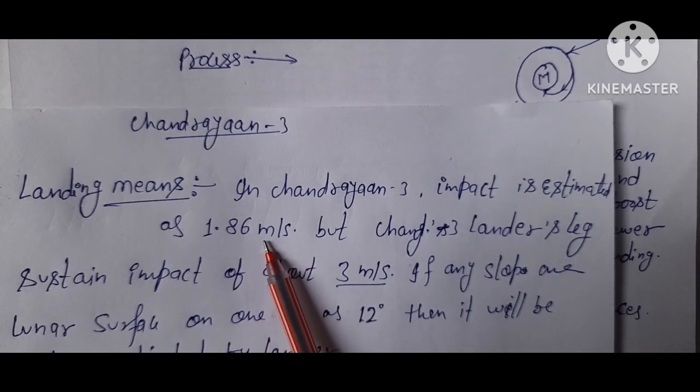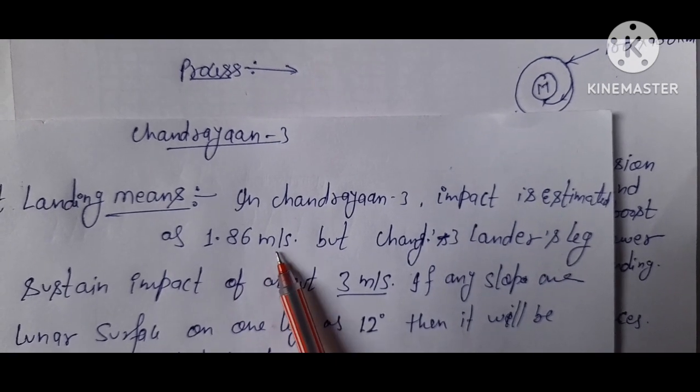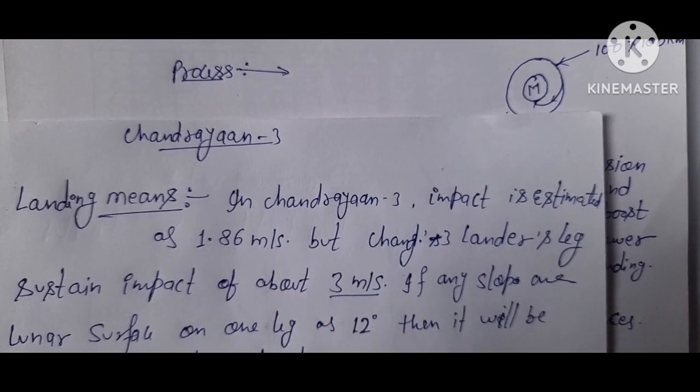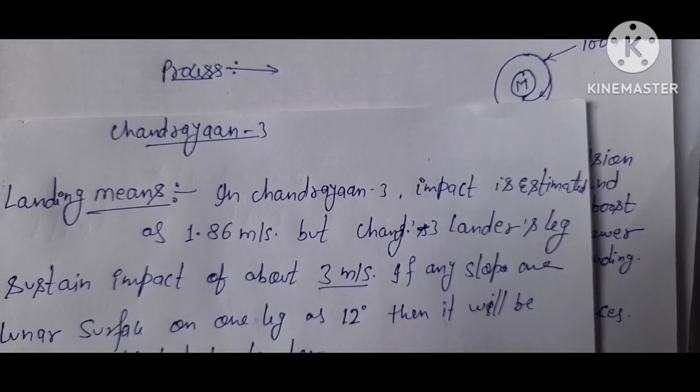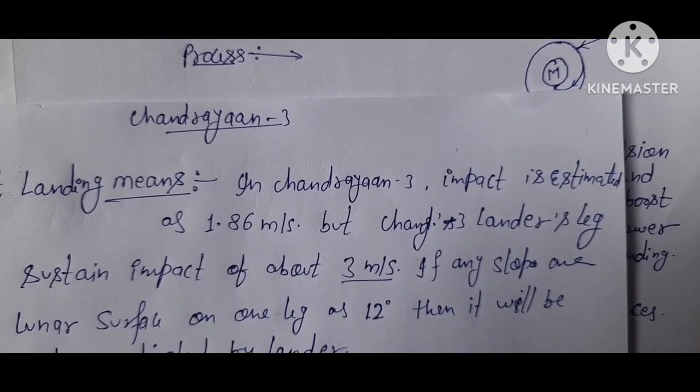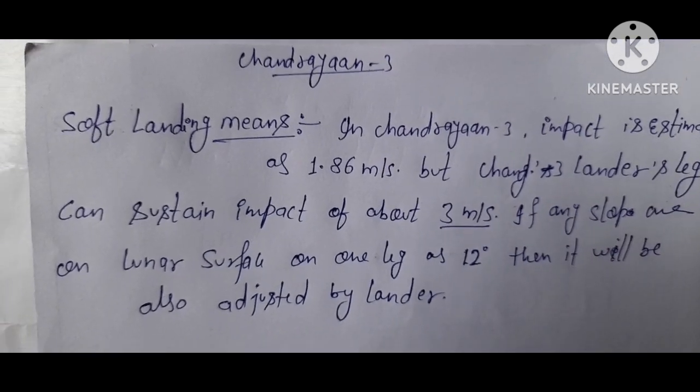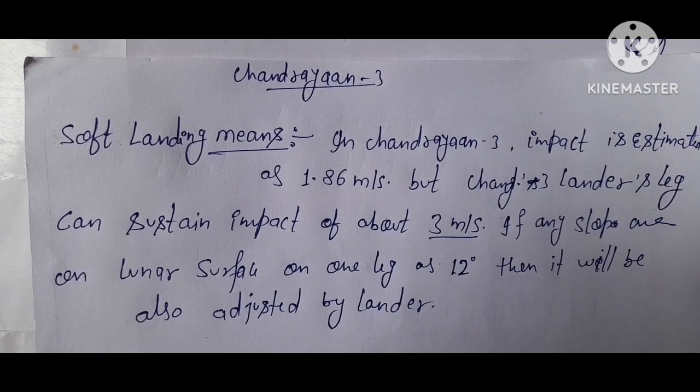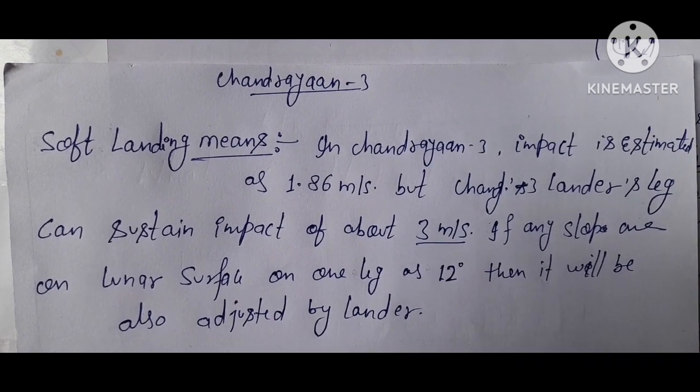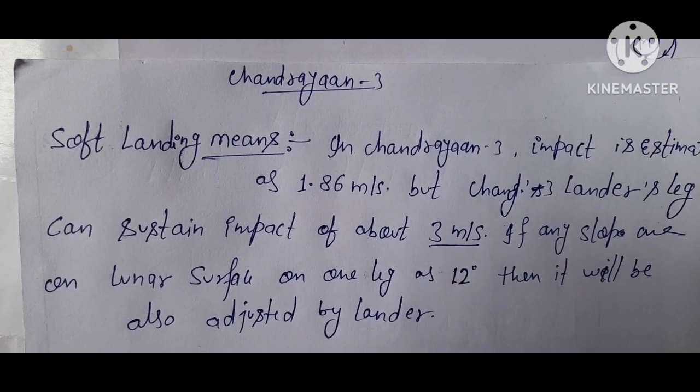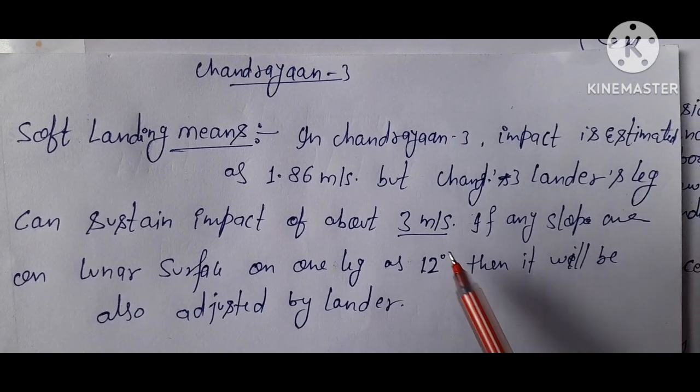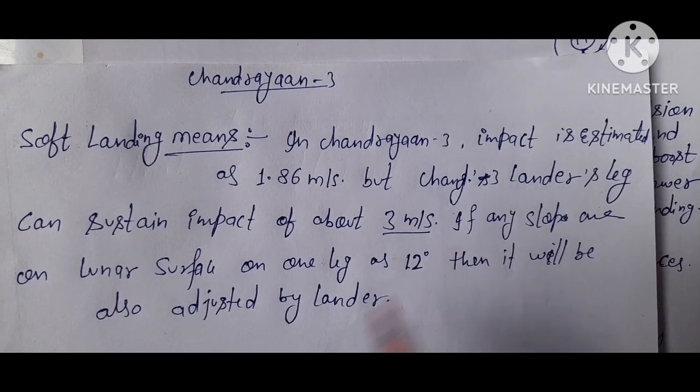1.86 meters per second, which can be sustained. The advanced legs of Chandrayaan-3 can sustain impact velocities of up to 3 meters per second.